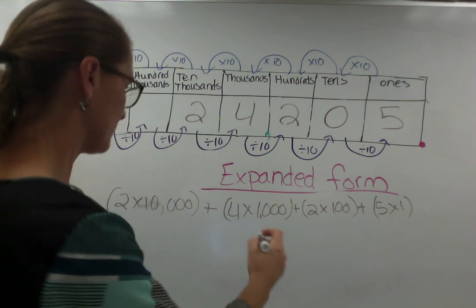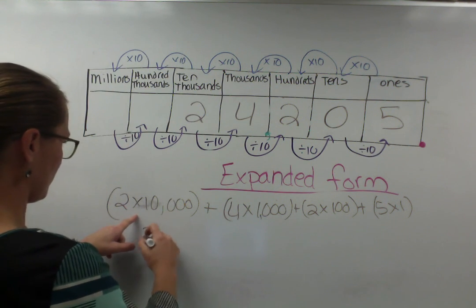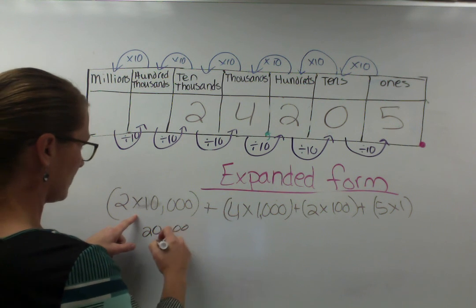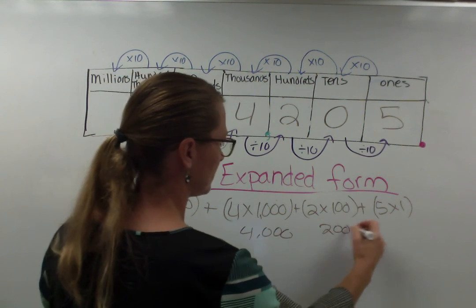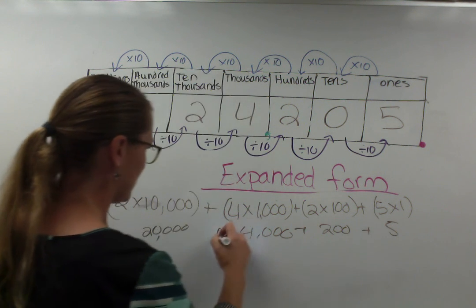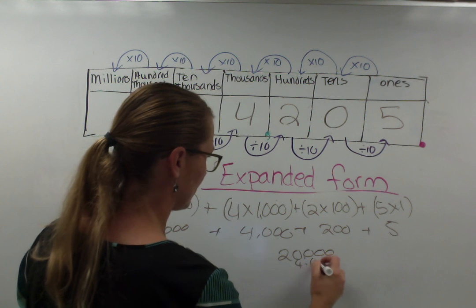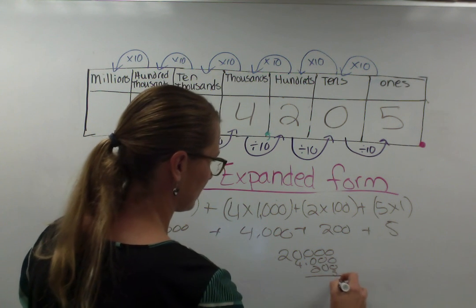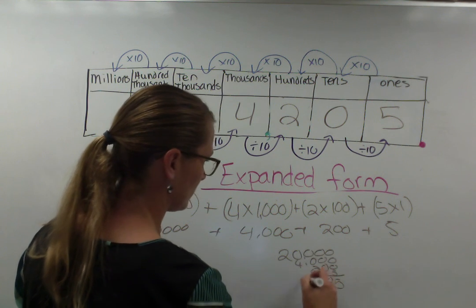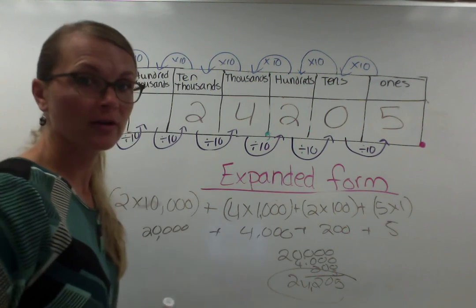And if we want to know if we got the number correct, we would add all this up. So this would be 20,000. This would be 4,000. This would be 200. And this would be five. And I would add them back together. 20,000. 4,200. Five. Five. Zero. Two. Four. Two. I get the number that I started with.